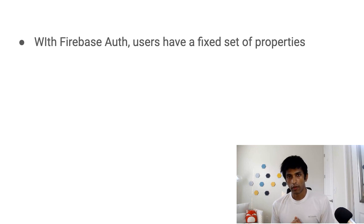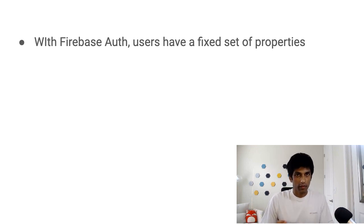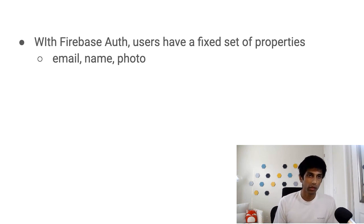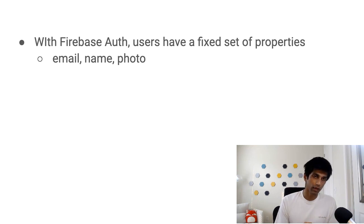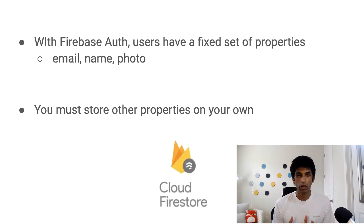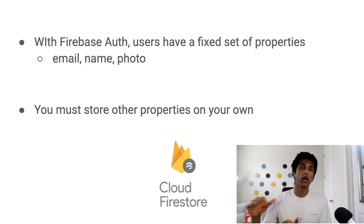One of the annoying things about Firebase authentication is that once you create an account in the app, the user entity has a fixed set of properties such as email, name, and photo. However, if you want to store anything else about the user — for example, in our app we want to store the string of emoji representing the user's status, or the updated time of that status — that is your responsibility. That's where Cloud Firestore comes in, as the database which keeps track of the user along with their status.